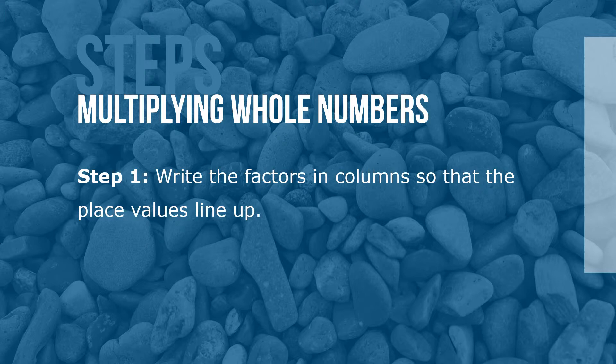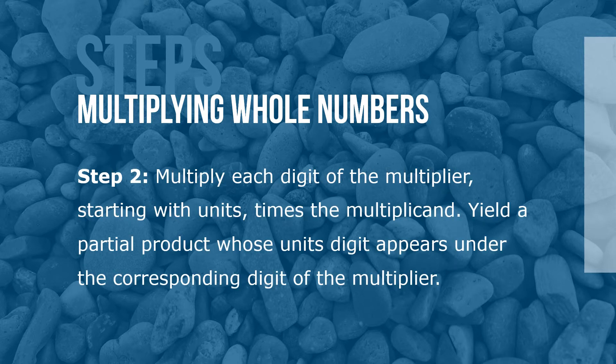Here are the steps for multiplying whole numbers. Step 1: Write the factors in columns so that the place values line up. Step 2: Multiply each digit of the multiplier, starting with the units, times the multiplicand. Yield a partial product whose units' digit appears under the corresponding digit of the multiplier.